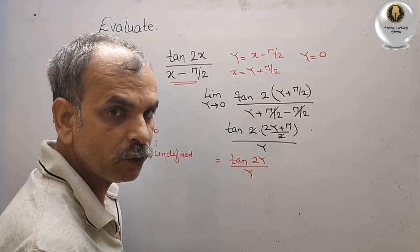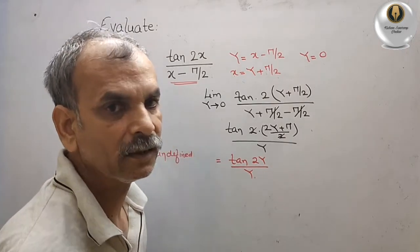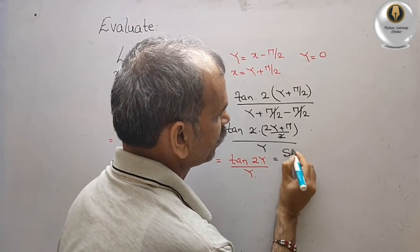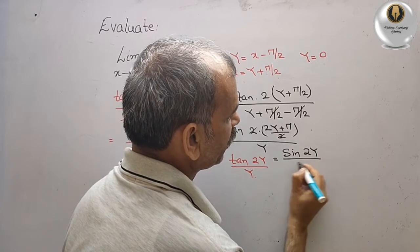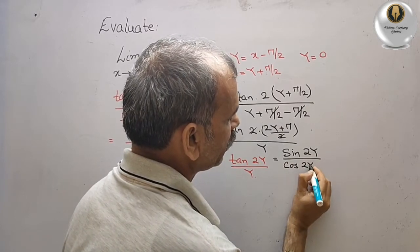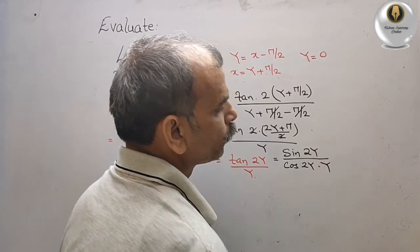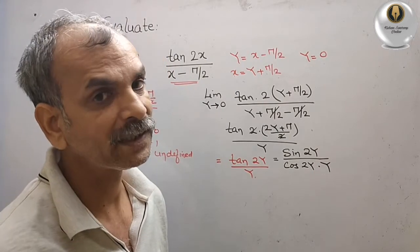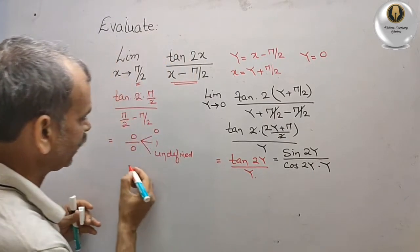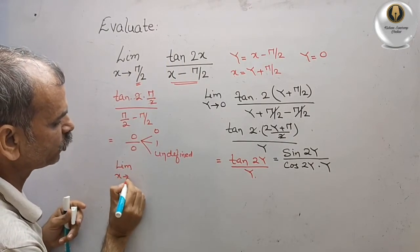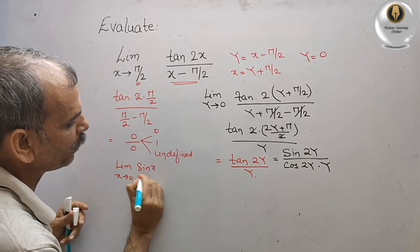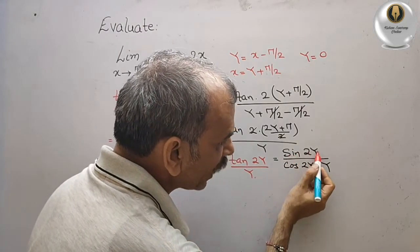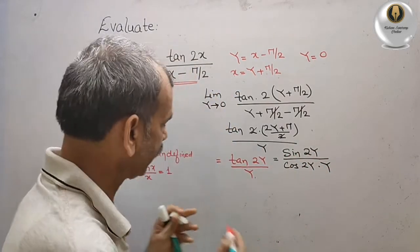Next, we split tan(2y) into sin(2y) / cos(2y). So the expression becomes sin(2y) / (cos(2y) · y). We know the standard theorem that lim(x→0) sin(x)/x = 1. We want to apply this to sin(2y) / (2y).